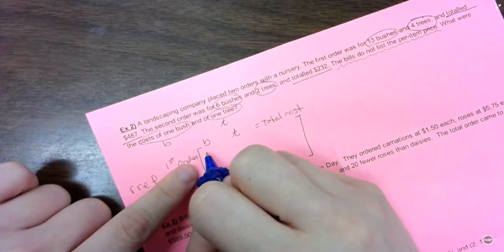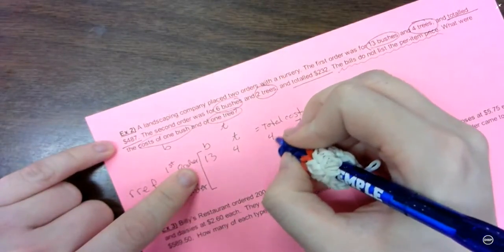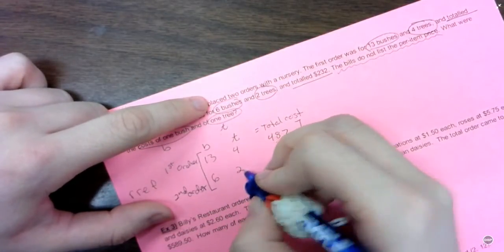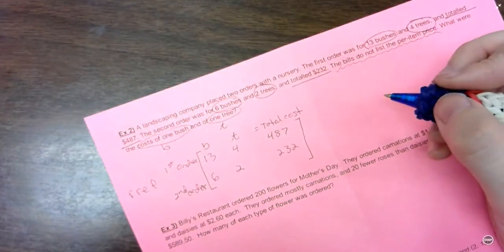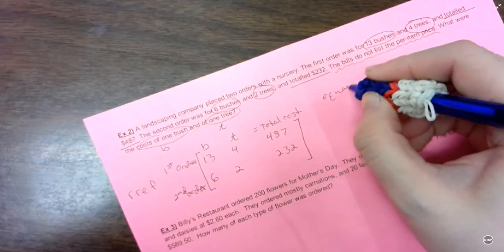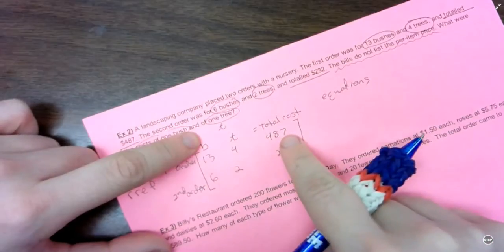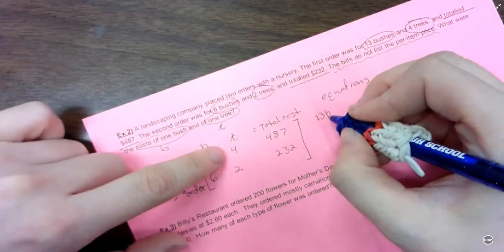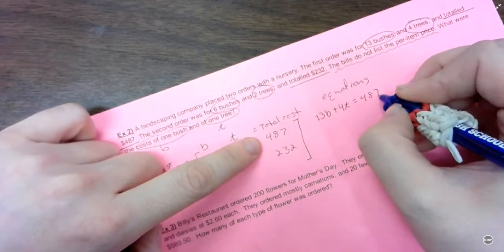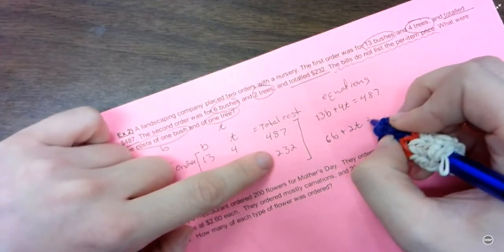So my first order was 13 bushes, 4 trees for $487. My second order was 6 bushes, 2 trees for $232. So again, if I need equations, this is how I would get them. Just take your coefficient with your variable and then your total. So 13b plus 4t equals $487. And 6b plus 2t equals $232.